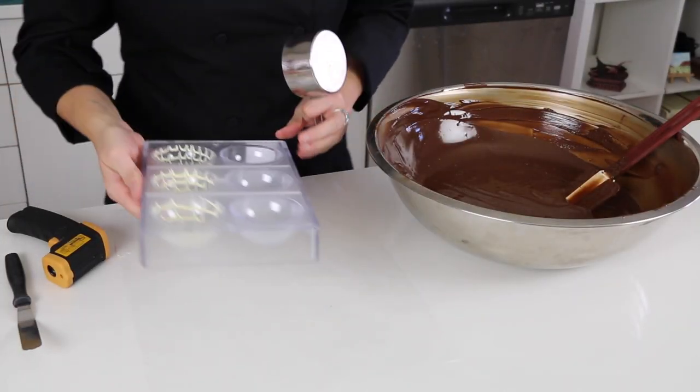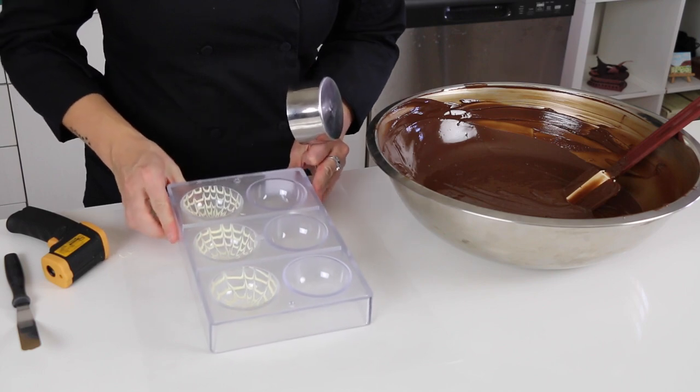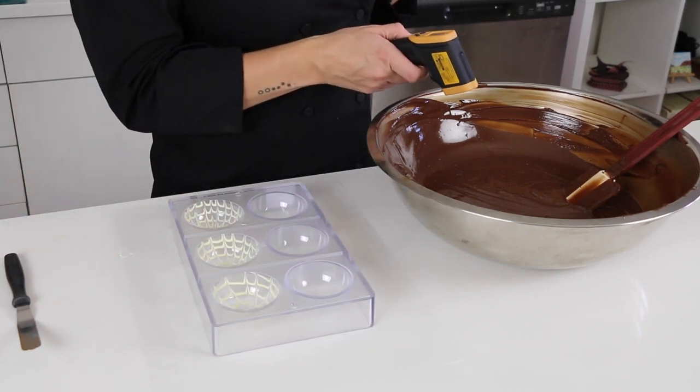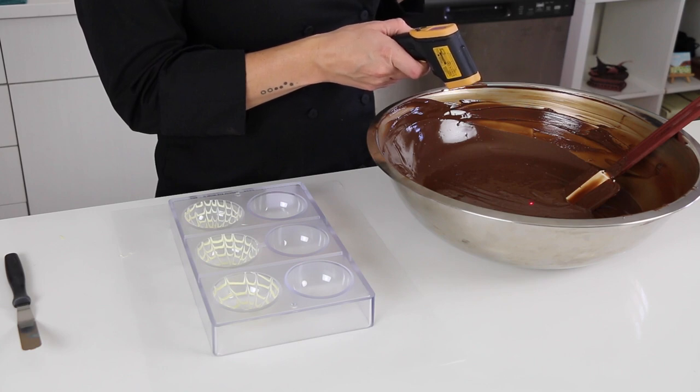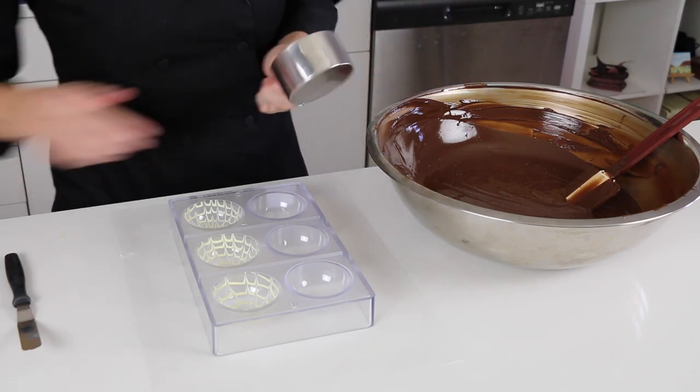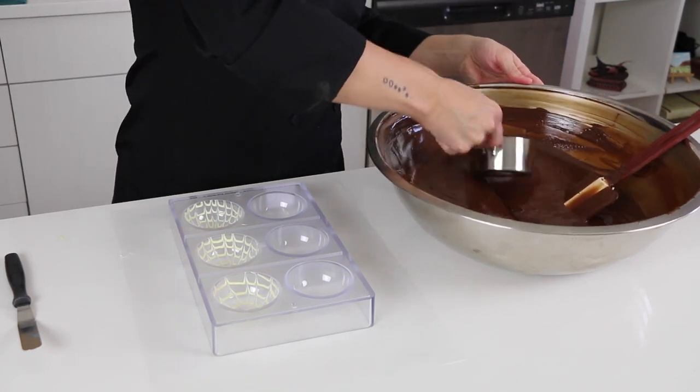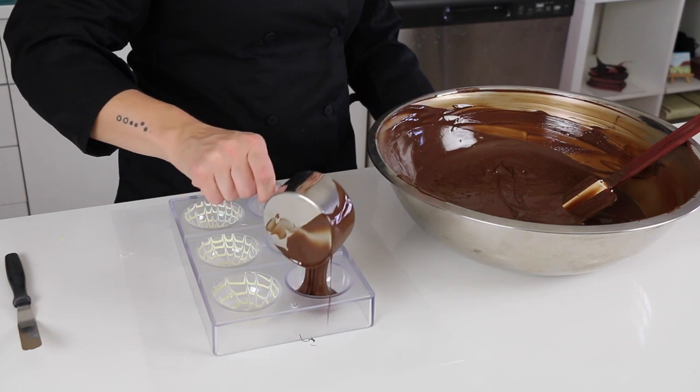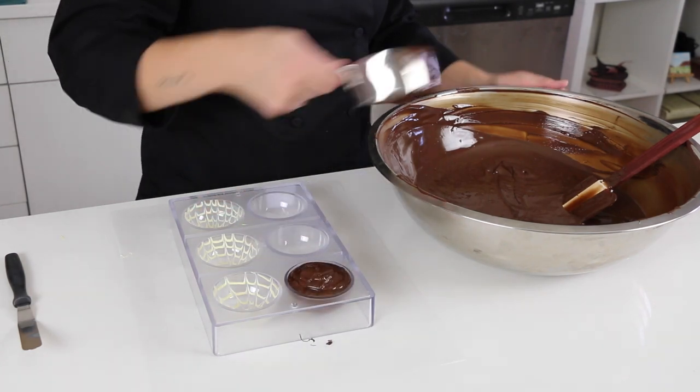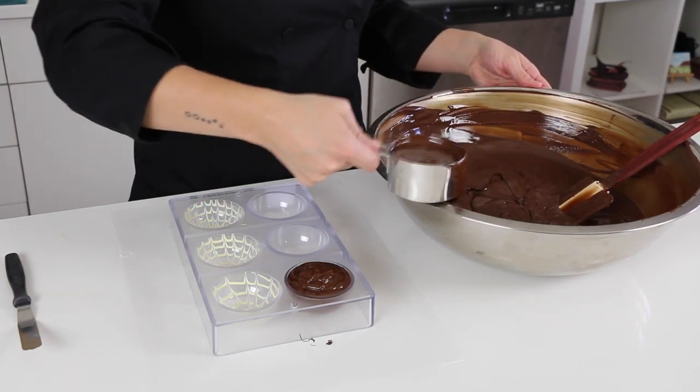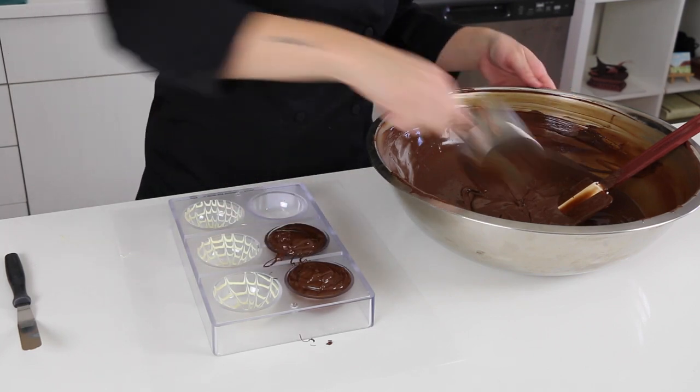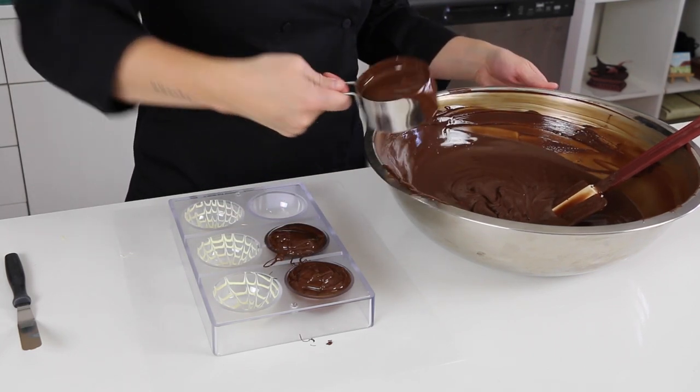All right, so my mold has been in the fridge for about 15 minutes. And I have some tempered dark chocolate. I'm going to fill it, it's about 31.2 degrees. And I'm just going to fill each cavity all the way to the top. I'm just using a one cup measuring cup. You can use a ladle or a cup.